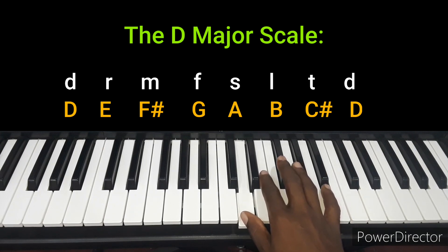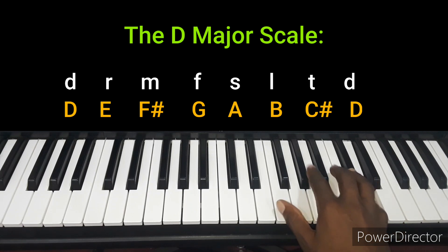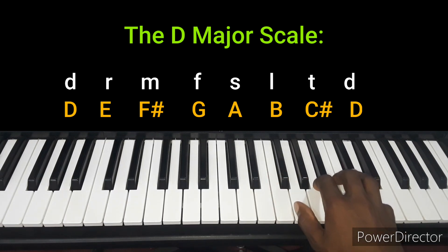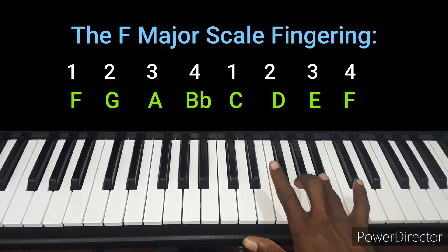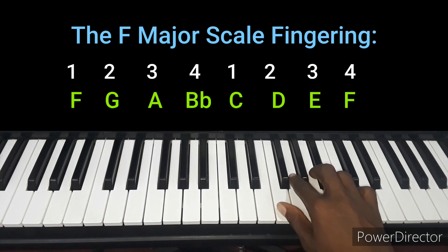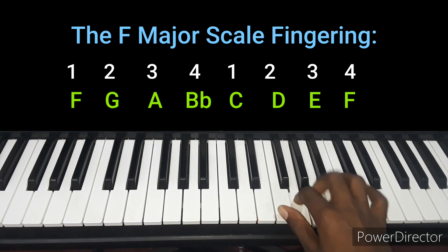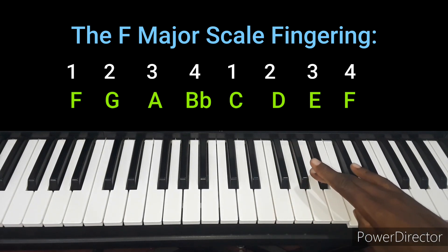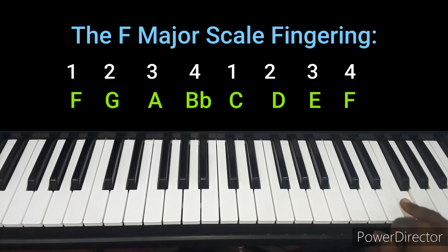The fingering for D major is the same: 1, 2, 3, 1, 2, 3, 4, 5. But in F major the fingering is different: 1, 2, 3, 4 — because when playing scales we do not use fingers 5 and 1 on the black keys. We play the black keys with fingers 2, 3, and 4, not 1 and 5. So in F major: 1, 2, 3, 4, then pass finger 1 under the 4, such that finger 1 plays the C, then Sol, La, Ti, Do — and the scale ends on finger 4, not finger 5.